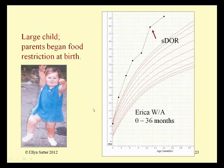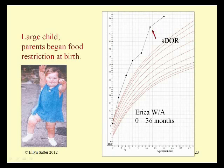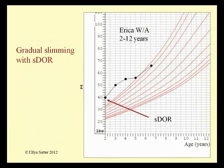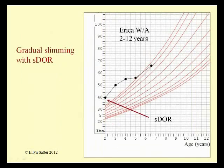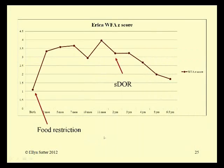Erica's parents assumed that since she was a big infant with a hearty appetite, she would grow up to be a fat adult. And so they began restricting her. They eventually established a division of responsibility, and later on she began to slim down. The Cliff Notes version is: restriction led to excessive weight gain, then division of responsibility led to gradual slimming over time.